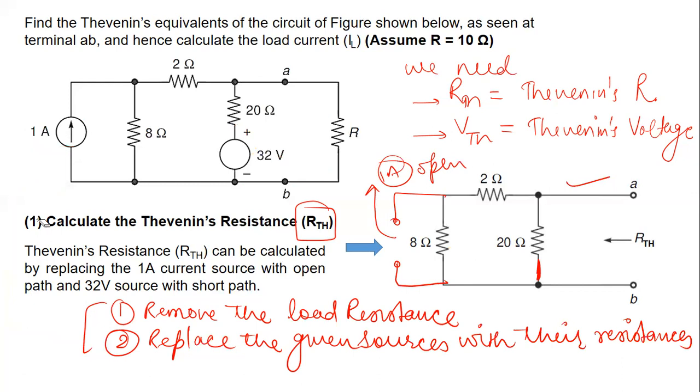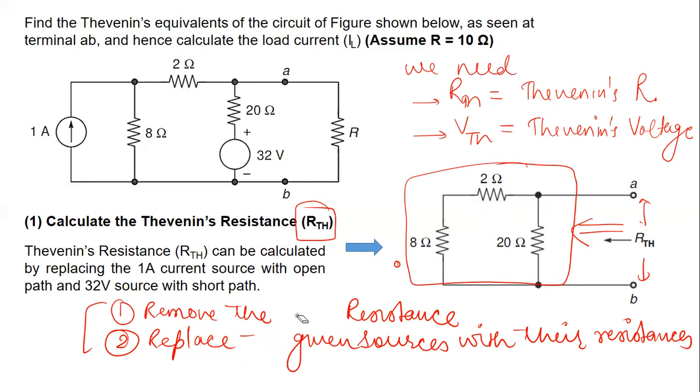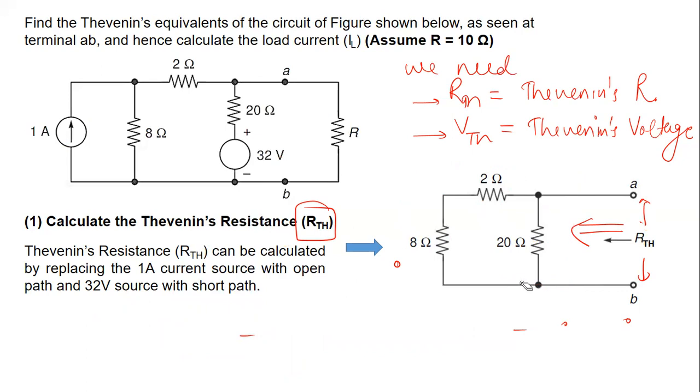As per the definition of Thévenin's resistance, Thévenin's resistance is the equivalent resistance which is measured from the open load terminals of the network by replacing all the sources with their resistances. If we are standing here, we see we have these three resistances connected in some topology. Let us try to find out what will be the value of RTH in this case.